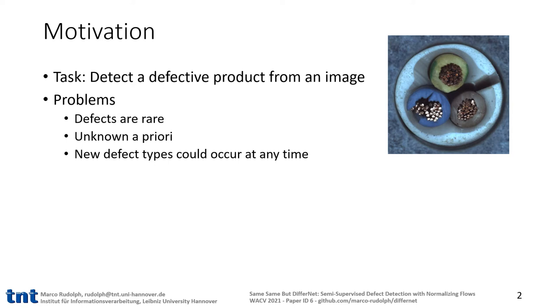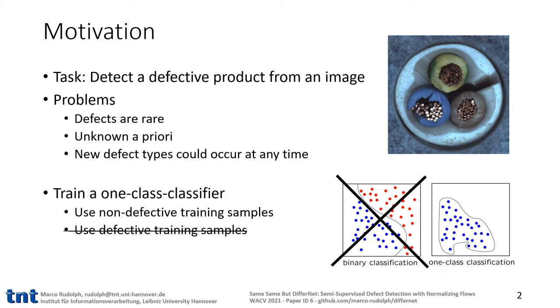Due to this lack of data, a binary classification is not helpful or applicable for defect detection. This is why you have to perform a one-class classification, also known as anomaly or novelty detection. Here you only have access to one of the classes in training, which is in our case the class of non-defective products. In testing, the classifier should decide whether a given sample is member of this class.